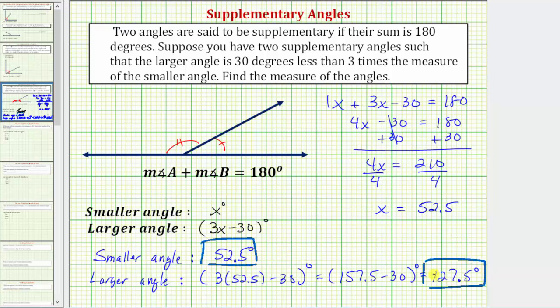Notice how the angles are supplementary, because 52.5 degrees plus 127.5 degrees does equal 180 degrees. I hope you found this helpful.